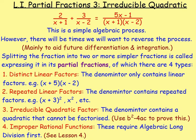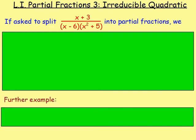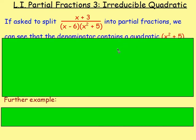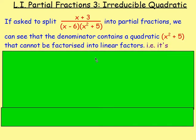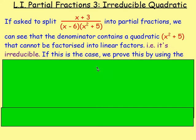So what is that all about? Well, if we're asked to split, for example, (x + 3) over (x − 6)(x² + 5) into partial fractions, we can see that the denominator contains a quadratic. However, it is not just any quadratic — it is a quadratic that cannot be factorized. So what do you do in that case? Well, first of all, you check that it cannot be factorized. And if it can, factorize it. But here it can't, and it is known as an Irreducible Quadratic.